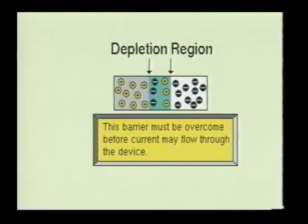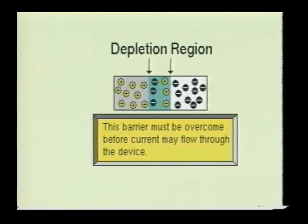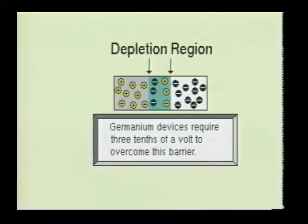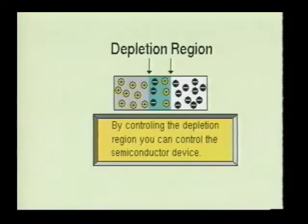The depletion region will have an equal number of positive ions on one side and negative ions on the other side. The depletion region forms a barrier which must be overcome before current can flow through the semiconductor device. For silicon-type semiconductor devices, this barrier requires a voltage of 0.7 volts before current can flow, and for germanium-type semiconductor devices, this barrier requires a voltage of 0.3 volts. It is this depletion region which makes it possible to control the semiconductor device.